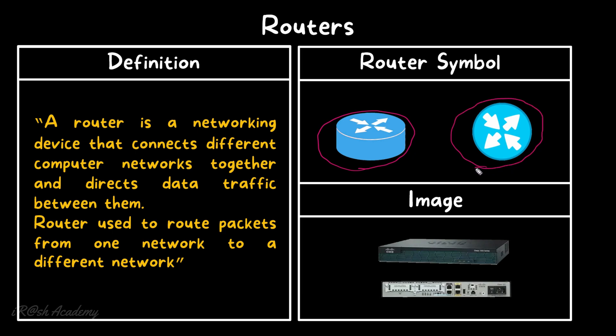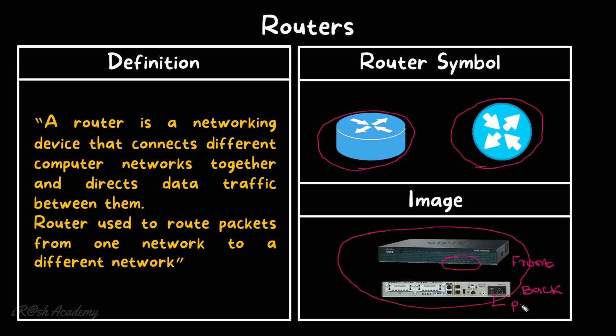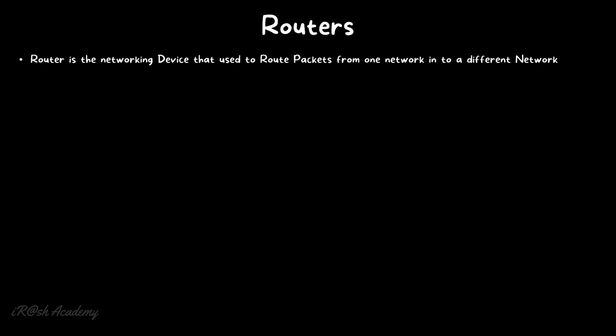Now let's look at the real image of the router. The first image shows the front view and the second shows the back view. On the front, we can see LED lights working as indicators for power status and interface status. On the back, we can see the power port, the router interfaces, and additional slots to install optional modules.